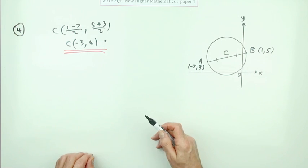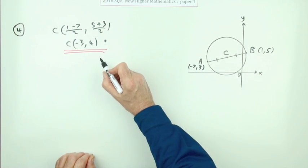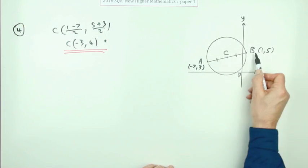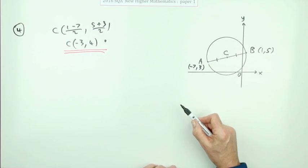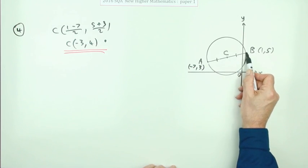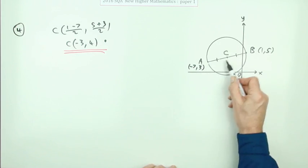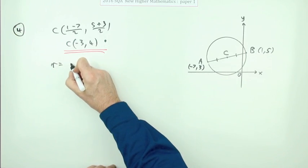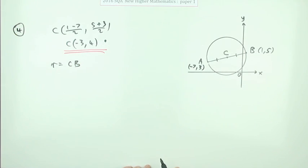Now this next part, it quite clearly wants you to calculate the radius. Well, you could get the diameter first and then half it for the radius, but as well just getting the radius straight off. The radius is the distance from the centre to any point on the circumference. You can choose either of them. So I'm just going to choose C to B. The radius will be the distance C to B.